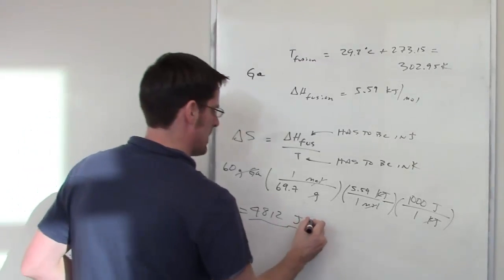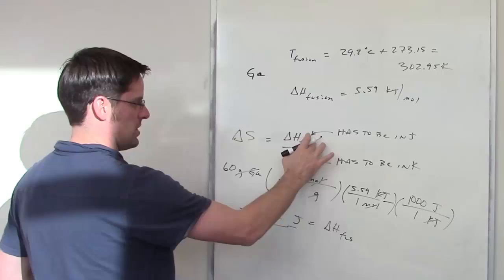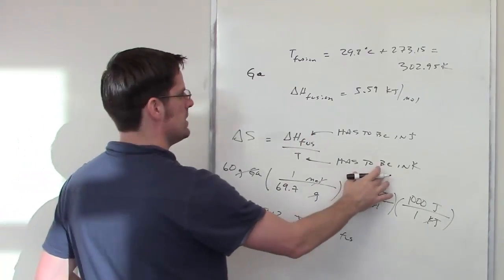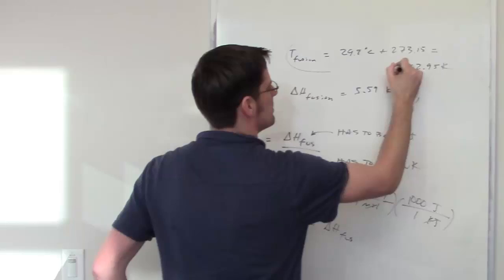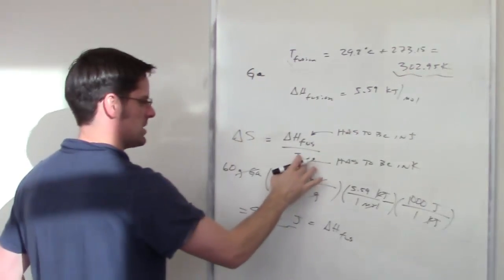So I've got this as my delta H fusion. That's the numerator. My temperature of fusion is this number. That goes in the denominator.